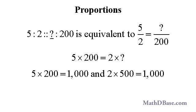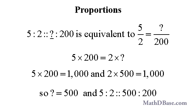5 times 200 is equal to 1000, so the missing number is 500. And we say that 5 is to 2, as 500 is to 200.